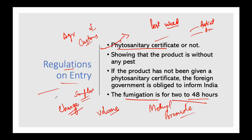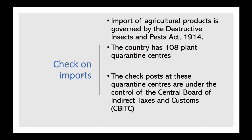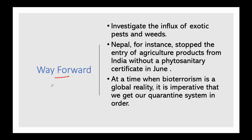These are the existing regulations. The imports of agricultural products are governed by the Destructive Insects and Pest Act 1914. In our country, there are around 108 plant quarantine centers at major airports, sea ports, transborder railway stations, and check posts, all under the control of the Central Board of Indirect Taxes and Customs. However, since invasive pests and weeds have still gotten through, our quarantine systems need a relook, overhaul, and update.